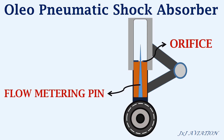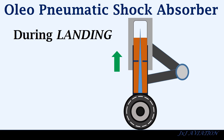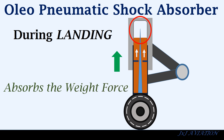Let's see what happens inside an oleo pneumatic shock absorber during landing to understand how it cushions the aircraft weight when it touches the ground. When the landing gear touches the ground, the inner cylinder moves into the outer cylinder. At the same time, the hydraulic fluid from the inner cylinder moves into the outer cylinder through the orifice. The air inside the outer cylinder gets compressed. The movement of hydraulic fluid through the orifice and the compression of air inside the outer cylinder together absorb the weight force of the aircraft.